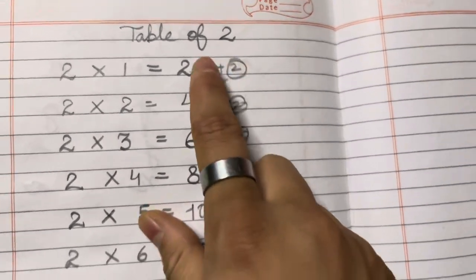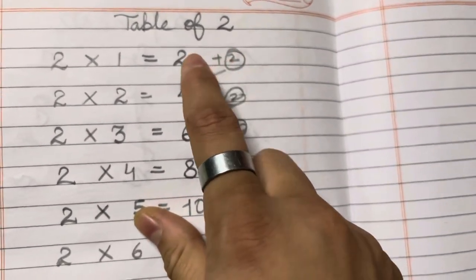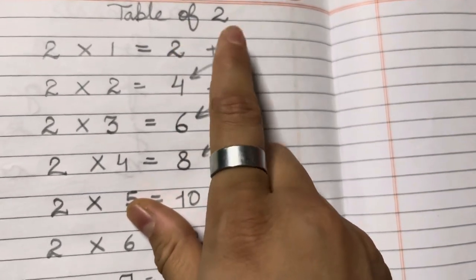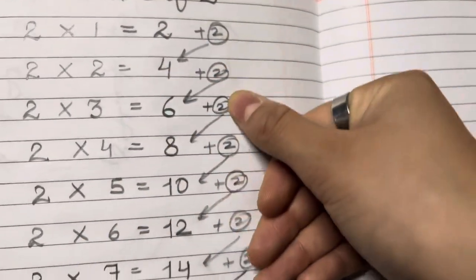So, if we want to write it, we just simply add 2 in each number. Suppose 2 plus 2, we will add 2 in 2, we will get 4 and so on.